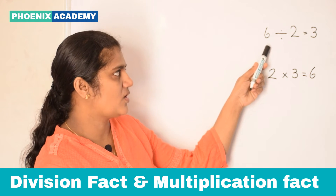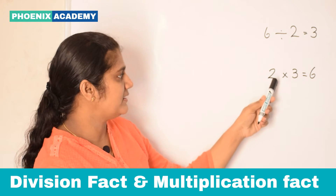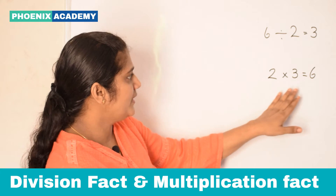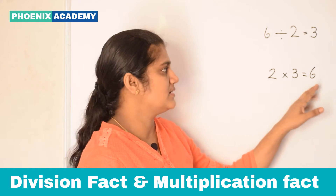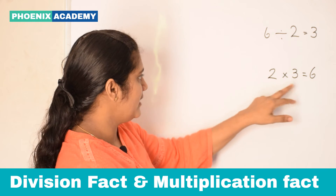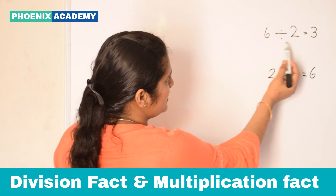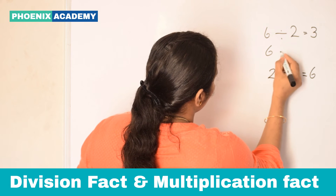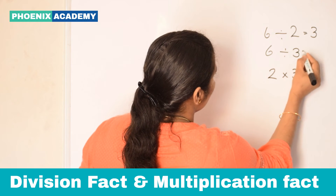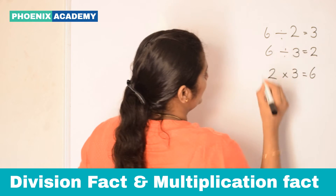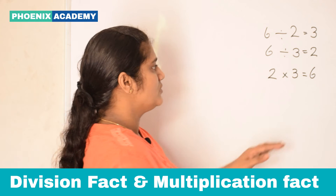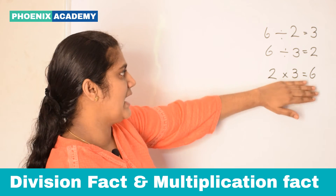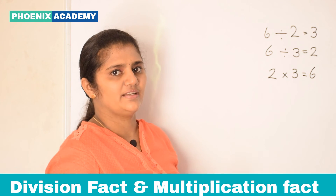This is called a division fact, and this is called a multiplication fact: 2 into 3 equal to 6. So here I can say 6 divided by 2 equal to 3, or 6 divided by 3 equal to 2. The division facts of this multiplication fact are 2 and 3.